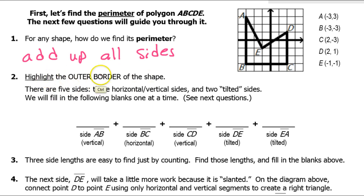Okay, so let's highlight the outer border of the shape. So when we're doing perimeter we're just doing like this and this and that and that and that. Alright, there will be no lines on the inside that will be part of the perimeter. We don't break it up into separate shapes for perimeter. That's only for area.